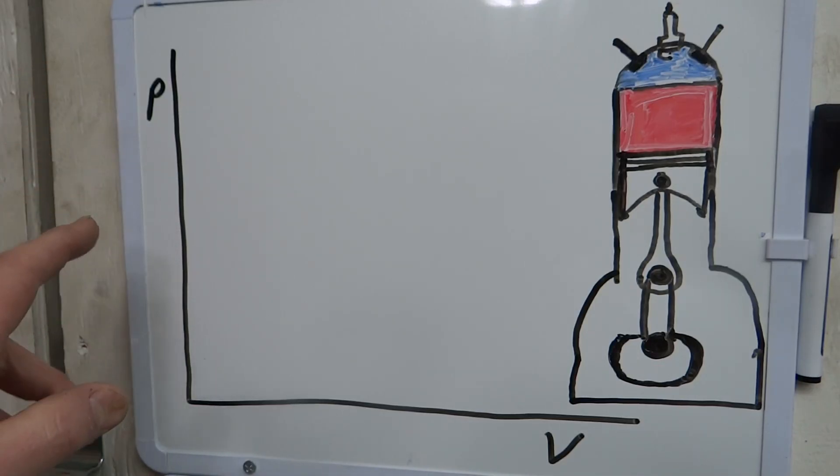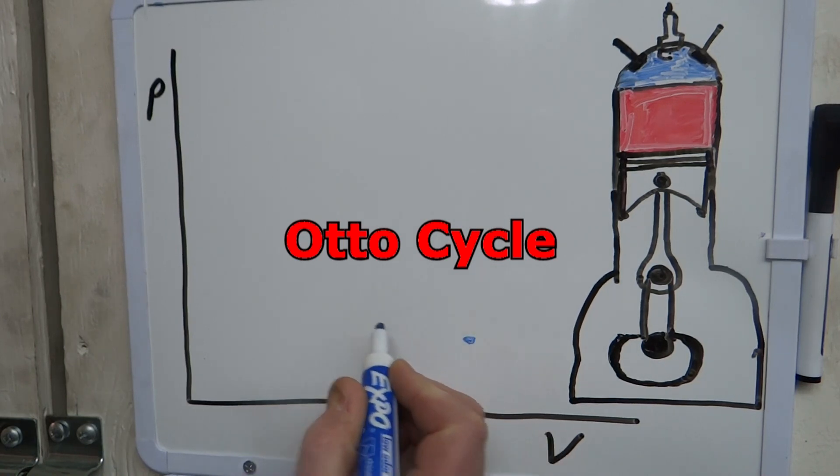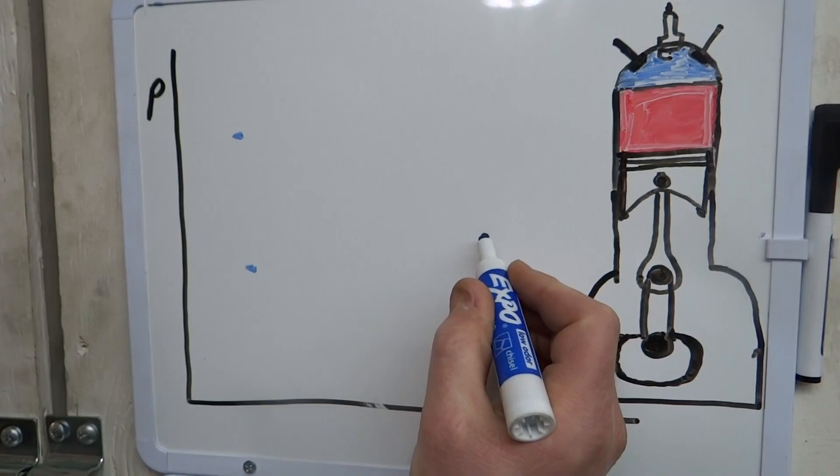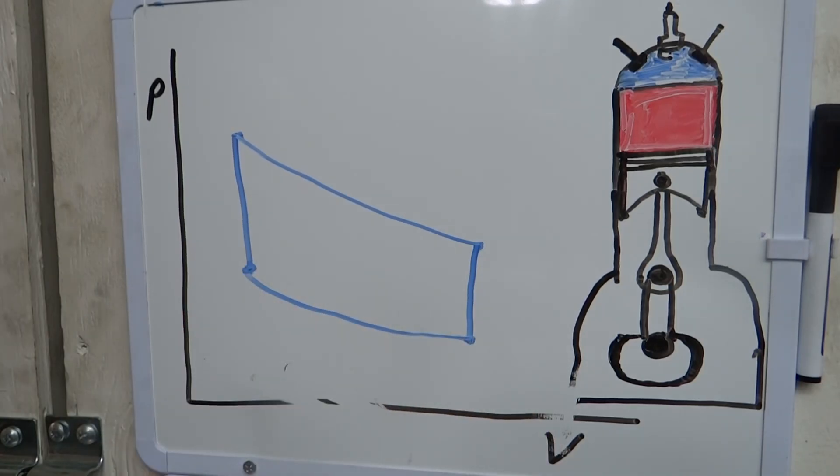What we're going to do is we're going to look at the system, the engine, on what's called a pressure volume diagram, or a PV diagram. And let me start out by, there's a few points on here that are kind of important. The cycle we're going to be looking at is something called an Otto cycle. And there's a few points on this that are kind of important. This isn't going to be perfect, but I'm going to do my best. This is roughly what the Otto cycle looks like on a PV diagram.